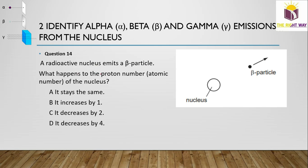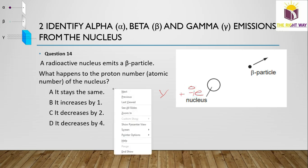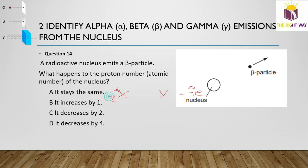Question 14: A radioactive nucleus emits a beta particle. What happens to the proton number? In beta decay, a neutron decays into a proton and an electron. The proton number therefore increases by one.